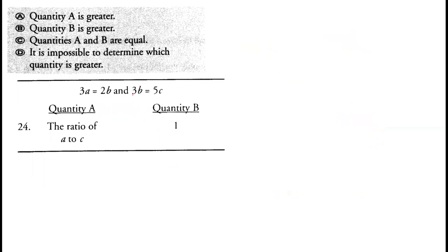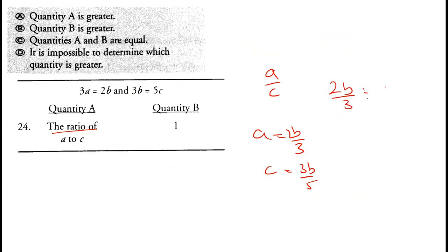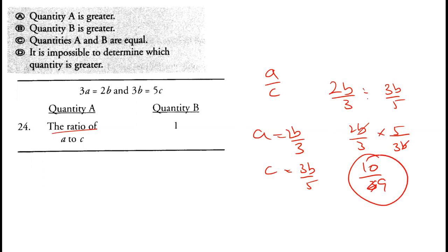Given 3a equals 2b and 3b equals 5c, find the ratio of a to c. From these, a equals 2b over 3 and c equals 3b over 5. Then a divided by c equals (2b over 3) divided by (3b over 5), which equals 2b over 3 times 5 over 3b. The b's cancel, giving 10 over 9. Since 10 over 9 is greater than 1, option A is correct.